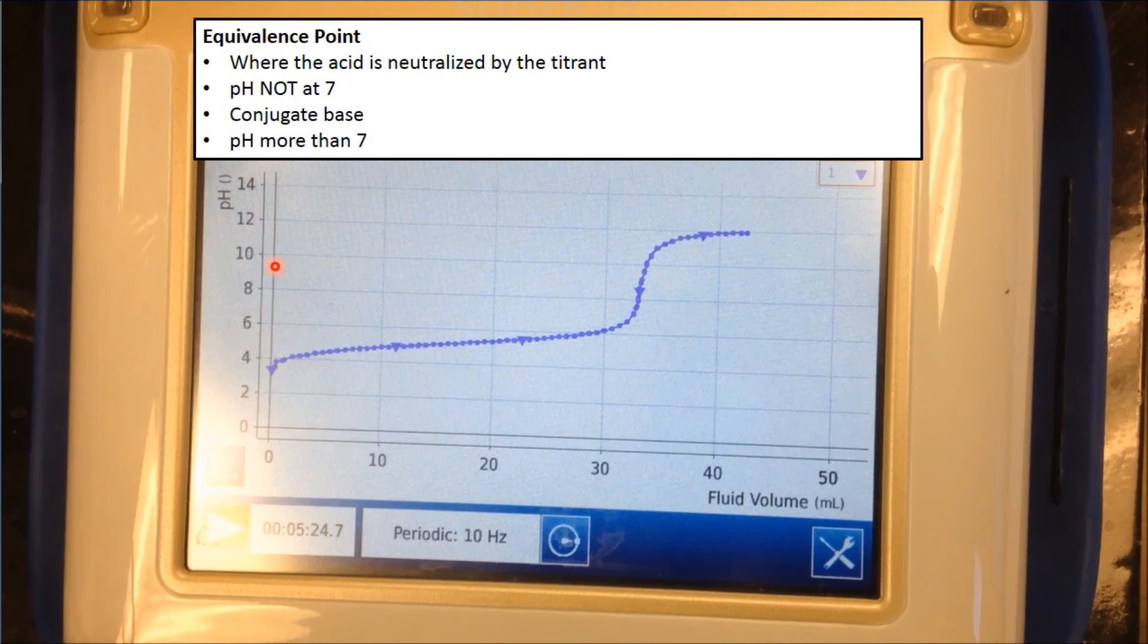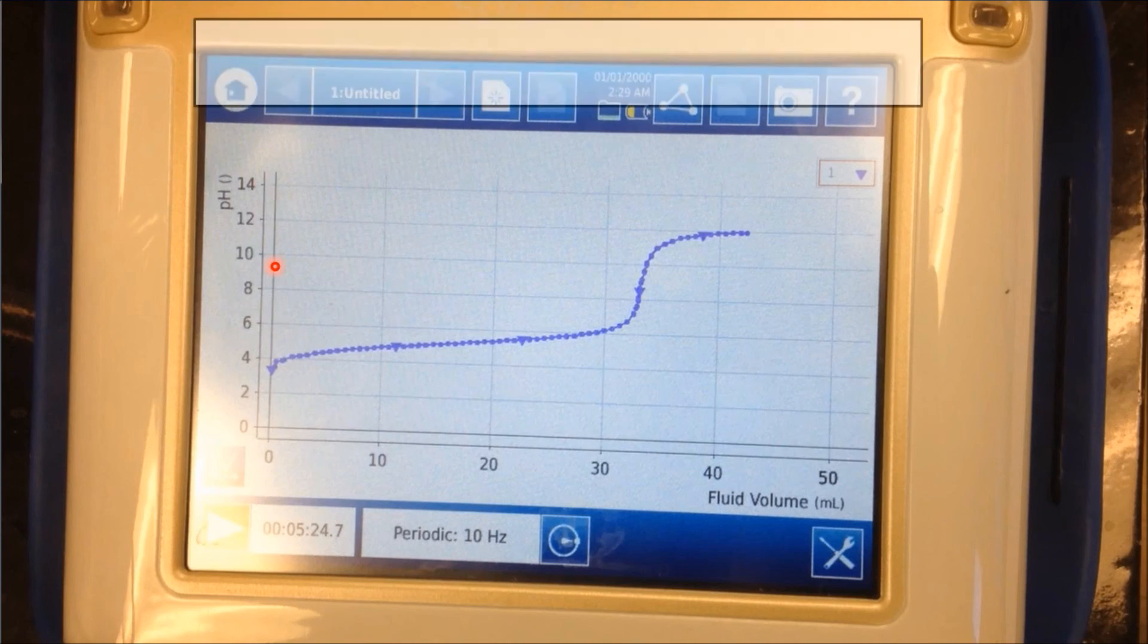On to our next part of the titration curve. Here we have the excess. The excess is basically the reaction has past equivalence. There is no acetic acid left to react with. So all you have in the beaker is maybe some water, and there's going to be the conjugate base and a lot of NaOH. The pH stays the same because you can't exactly change the pH just by adding more NaOH. pH can only change if there's a change in the concentration of OH-.